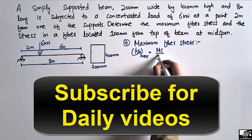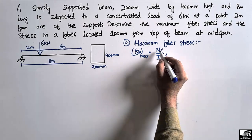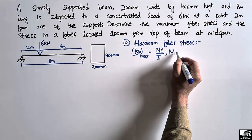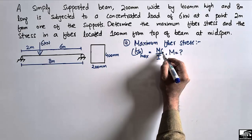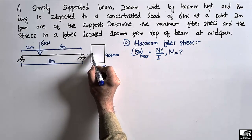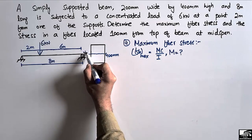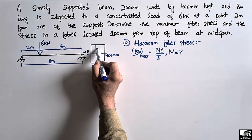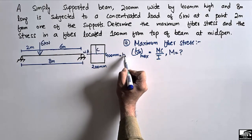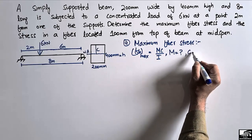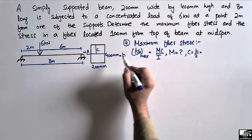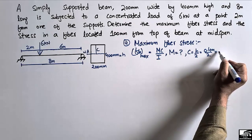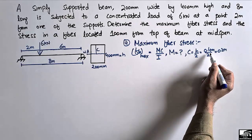Here M is the maximum bending moment in the beam, which is unknown. C is the distance from the neutral axis to the extreme fiber of the beam, equal to h/2. With a thickness of 400 mm, c equals 0.4 divided by 2, giving c equal to 0.2 meter.